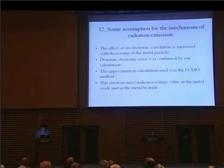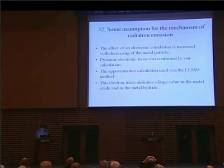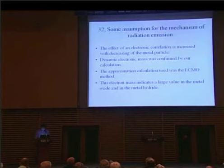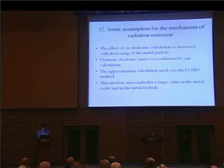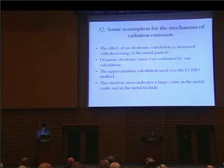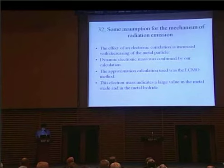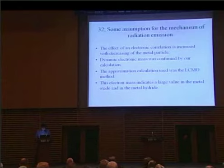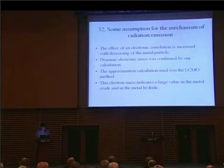Next is my theoretical speculation. We assume that in order to understand the mechanism generating neutron radiation, the reaction takes place inside the reactive material particle with hydrogen atoms. The dynamic interaction of electrons and hydrogen atoms in the particle is quite different from the bulk. We use the method of LCAO approximation for the orbital calculation of electrons and hydrogen atoms. The effective mass of the electron in the metal particle was found to exhibit a large value by this calculation.